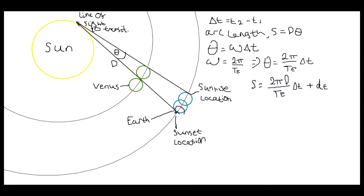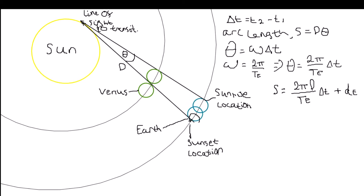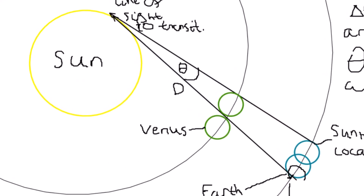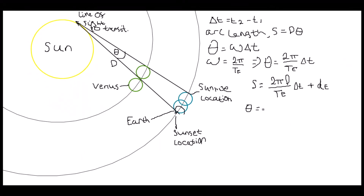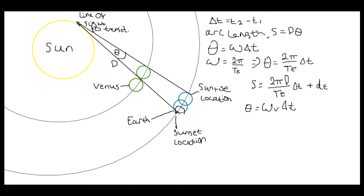Now we need another way to write out that arc length, and luckily we can do so from analysing Venus's motion in the same time frame delta T. Remember arc length is r·theta, and if we let r equal big D again, we can now use theta as Venus's orbital speed multiplied by delta T. This is fine here, as these sections are roughly the same, and theta for the Earth is the same as theta for Venus as shown by the diagram. Again, I'll write theta as omega multiplied by delta T. Omega here is 2pi divided by TV, which is the period of Venus's orbit — essentially how long a year is on Venus. This allows me to write the arc length as 2pi·D divided by TV, multiplied by delta T.